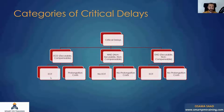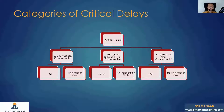The second category is NND — Non-Excusable and Non-Compensable. In this case, there is no EOT and there is no prolongation cost claim, because it is the contractor's default. It is still a critical delay because the project is in delay, but it falls into this category called NND.